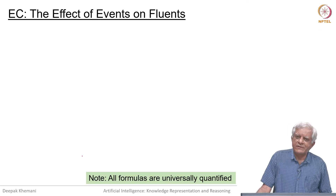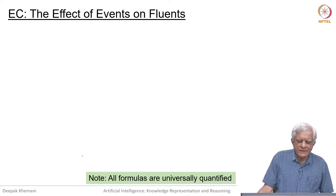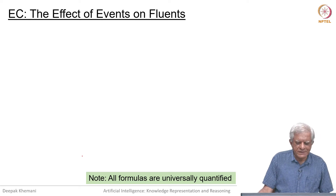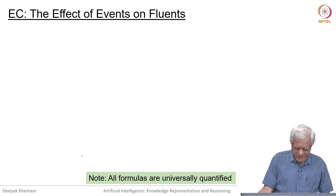Welcome back. We have been looking at event calculus and we have looked at some predicates of the calculus. Now let us look at some relations between these predicates, in particular the effect of events on fluents.